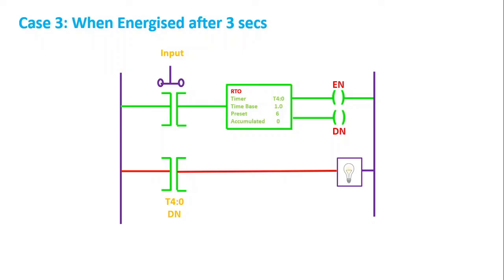And once the done bit is high, if you carefully observe the same address is used over here, and that is why this also goes high. The rung gets energized, and consequently, the current starts flowing to the load, and the light starts glowing.